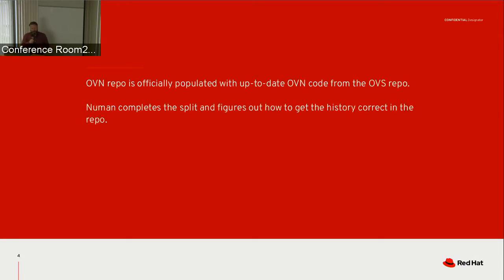Then in July, that's when the OVN repo in the OVNorg GitHub organization became the official place to do new OVN development. I have to give tremendous credit to Newman because he figured out how to get the history correct in the OVN repo, and he also put in the work to make it so that we didn't need a git subtree anymore either.